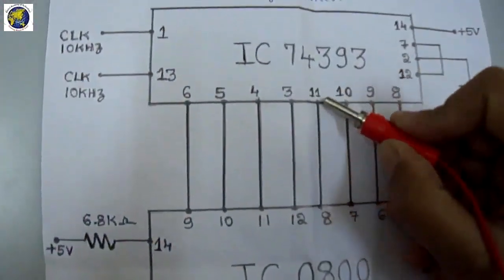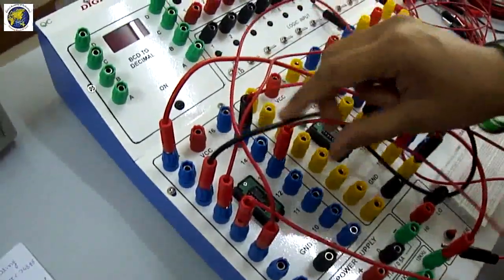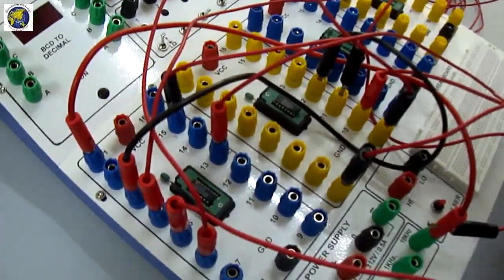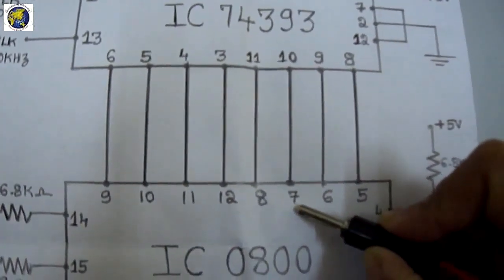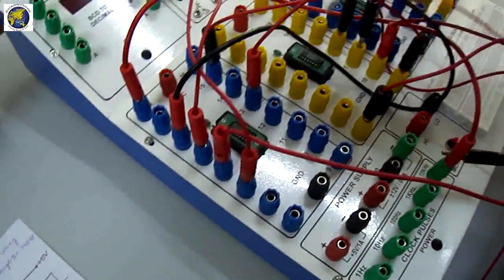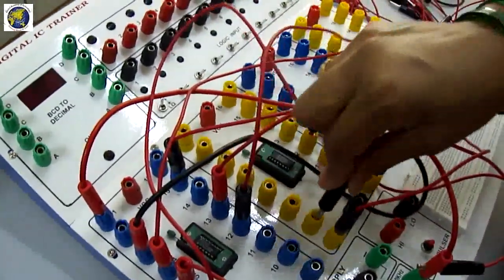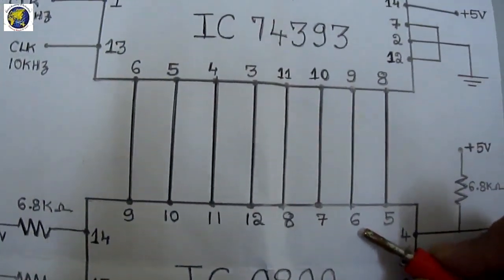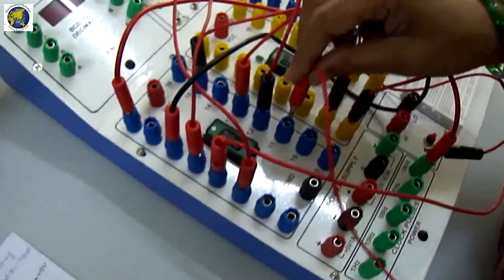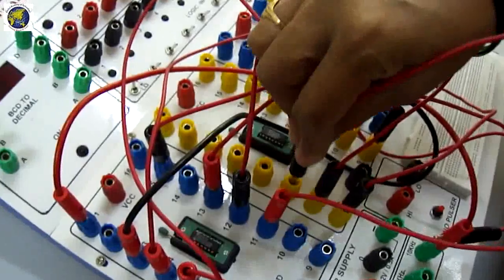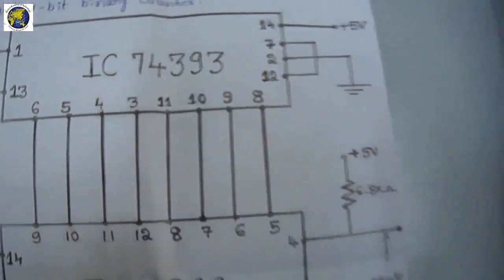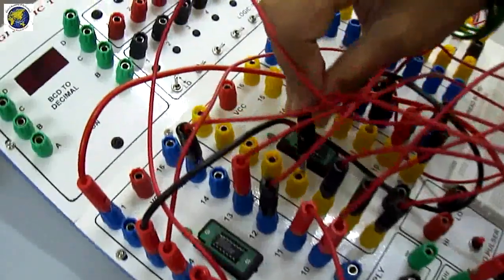Next, 74393 pin number 11 is connected to DAC pin number 8. Then 74393 pin number 10 is connected to DAC pin number 7. Then 74393 pin number 9 is connected to DAC pin number 6. Finally, 74393 pin number 8 is connected to DAC pin number 5.